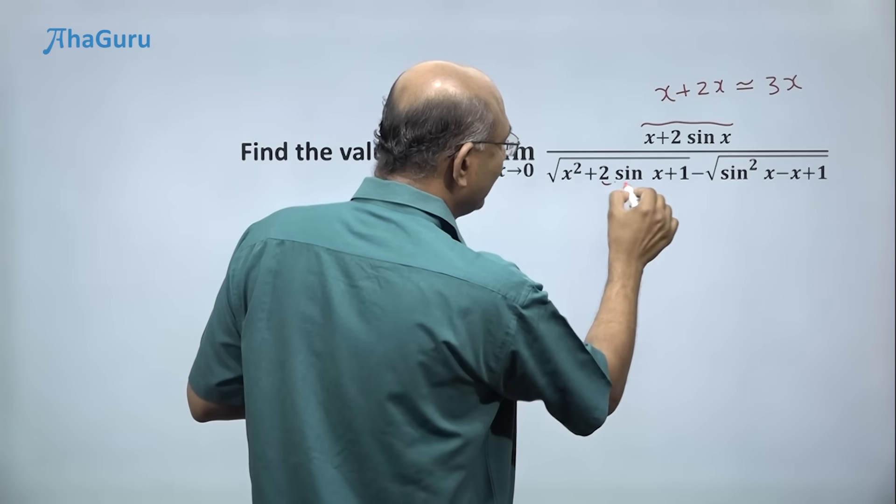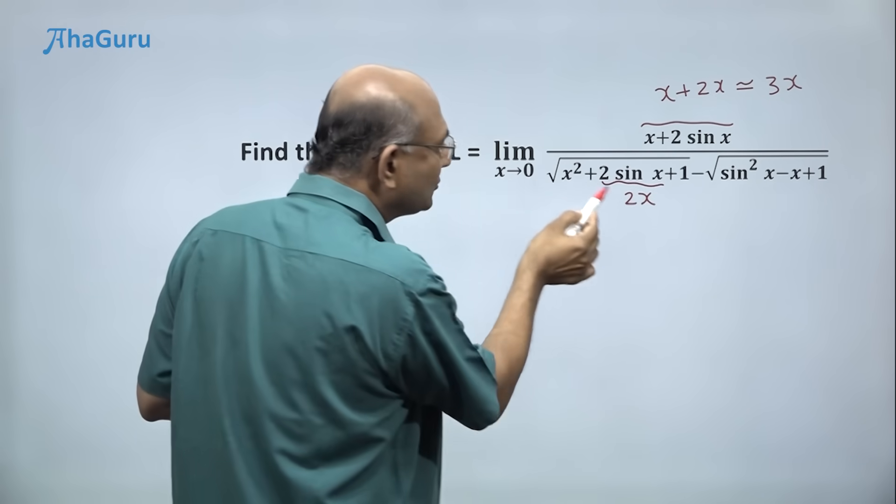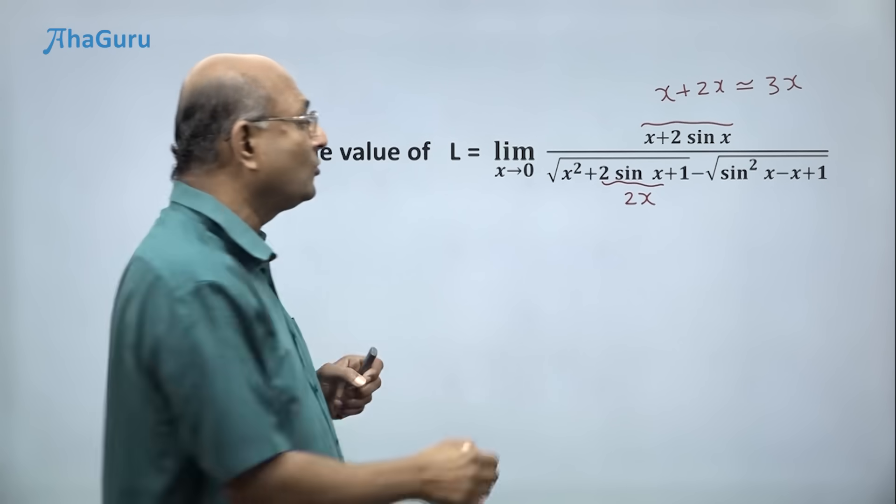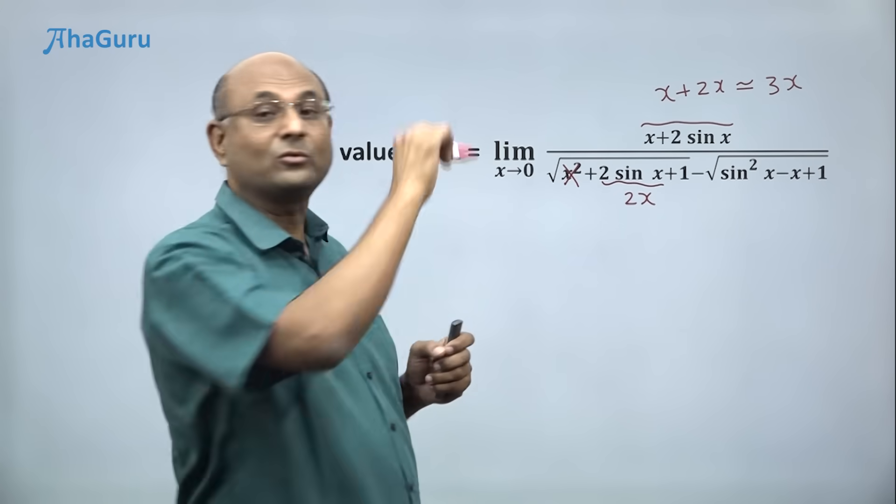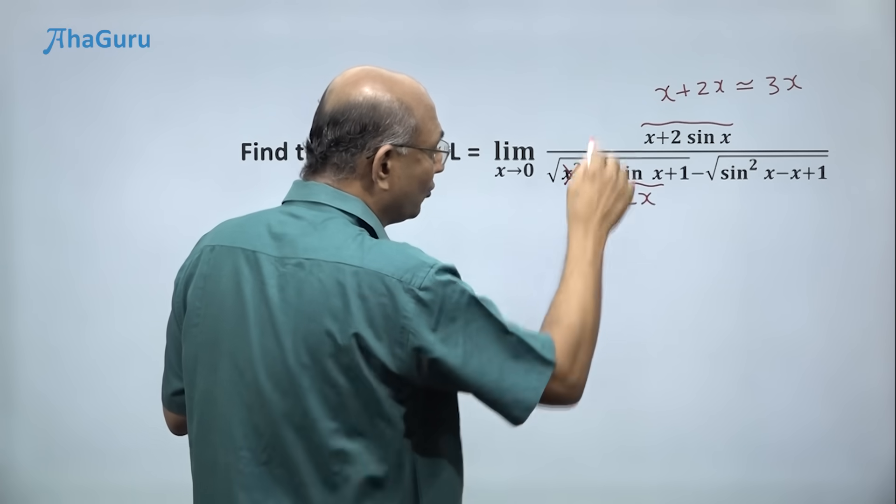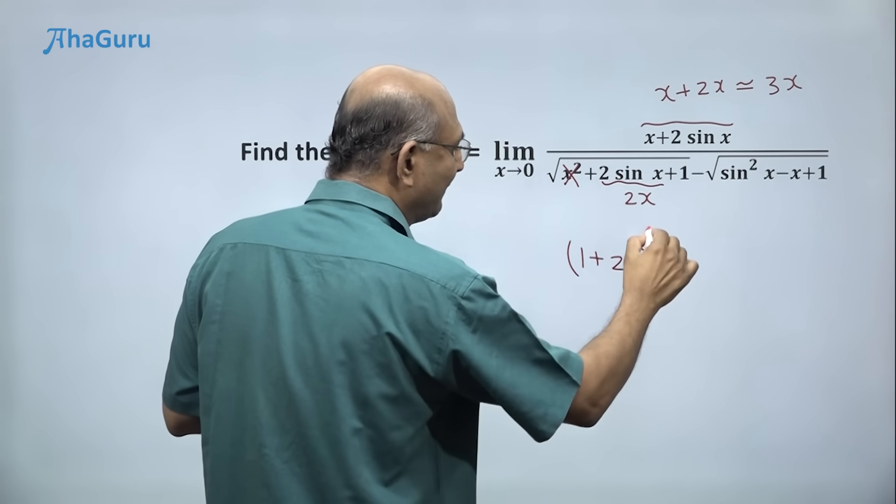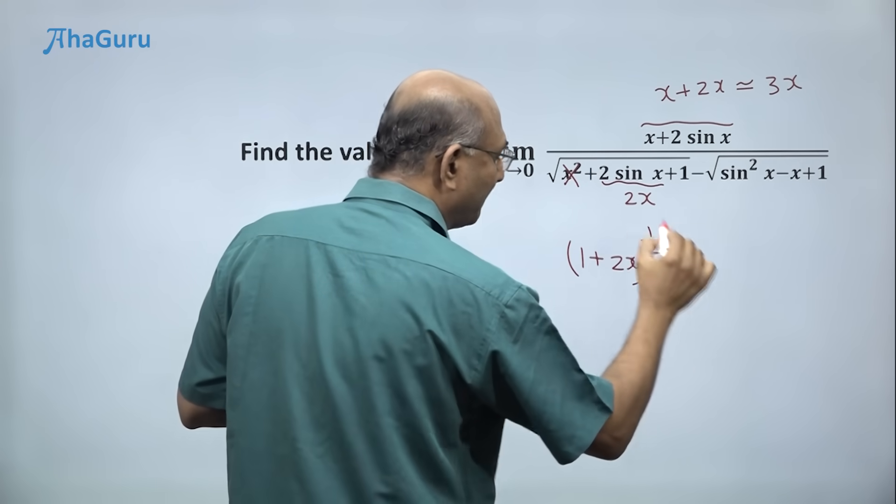But let us look at the denominator. This is 2x. 2 times sin x is 2x. But x square is very trivial compared to x, so I can throw that out. So what do I have here? 1 plus 2x with a root, right? So I will write it as 1 plus 2x. Instead of writing root, I will write power half, minus...